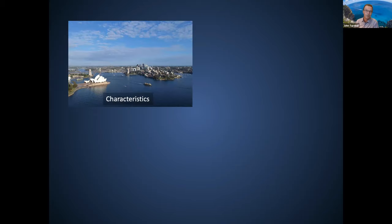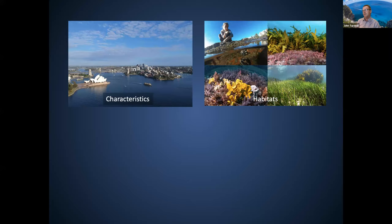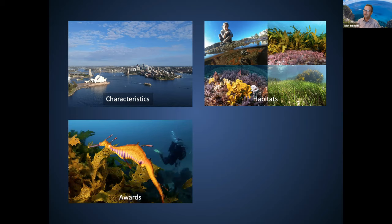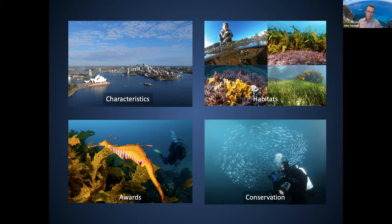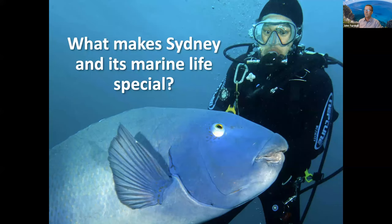I'm going to cover four things: first, the characteristics of Sydney that make for its incredibly diverse marine life. Those characteristics don't include the Harbour Bridge or the Opera House — there's more to it than that. Then I'll go through some of the key habitats, which align nicely with the chapters of the book Underwater Sydney that we arranged around habitats. I'm then going to give some awards — the marine life receives the awards, not you — and then talk a little bit about conservation and some of the conservation challenges that we have.